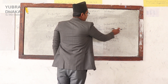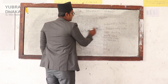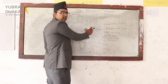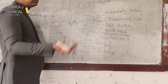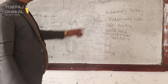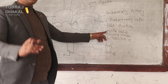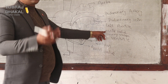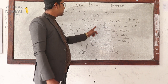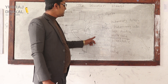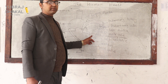The oxygenated blood is then carried by the pulmonary veins to the left auricle. During relaxation of the heart, the left auricle receives this oxygenated blood through the pulmonary veins, and then the blood moves towards the left ventricle.